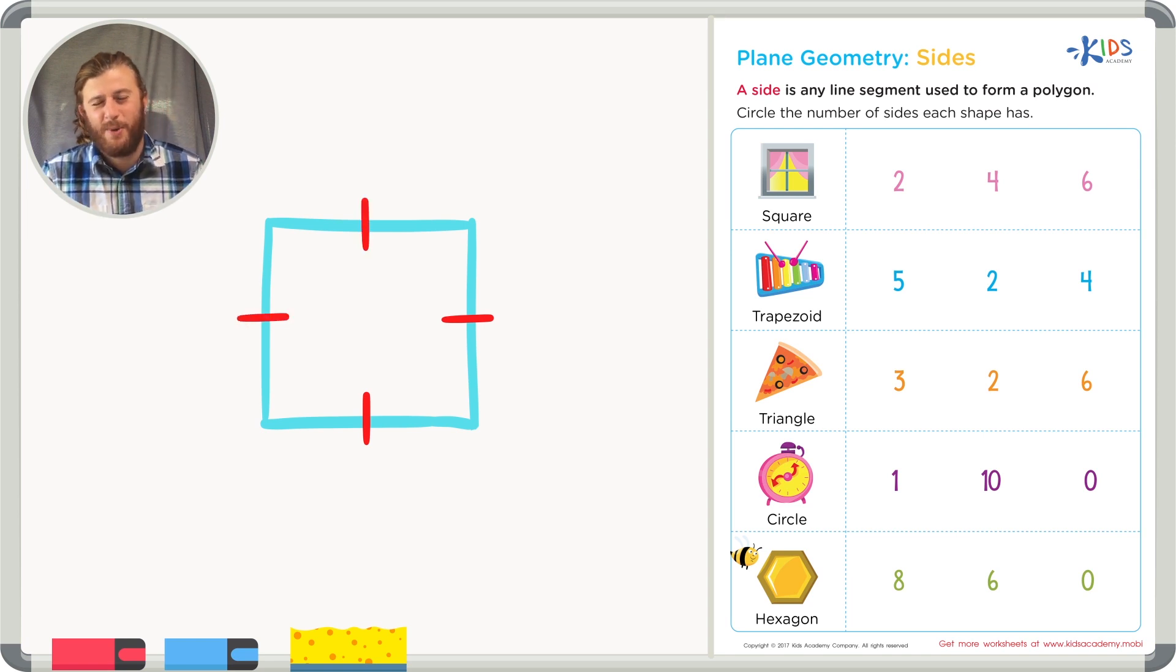Okay, I'm pretty sure that this square has four sides. But let's count the sides in the picture on the worksheet to make sure. One, two, three, four sides. A square has four sides. Let's circle number four.